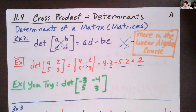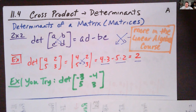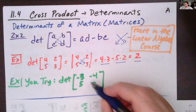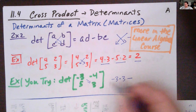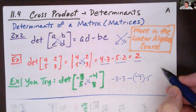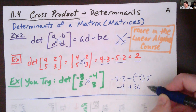Why don't you guys go ahead and give it a try? The matrix has top row 4, negative 3, negative 4 and bottom row 5, 3. Pause the video and do it. If we do the diagonals, we've got negative 3 times 3, minus negative 4 times 5. That gives us negative 9 plus 20, which is 11.